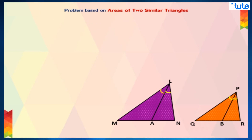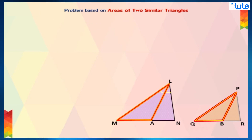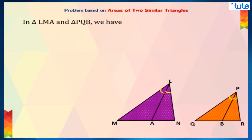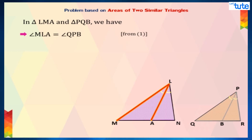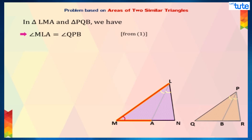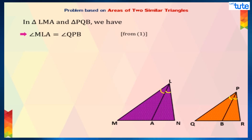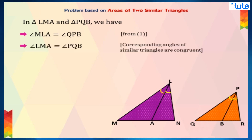But since LA is the angle bisector of angle L and PB is the angle bisector of angle P, we can say that angle MLA is equal to angle QPB. We'll consider this as equation 1. Now observe triangle LMA and triangle PQB. From equation 1, we know that angle MLA is equal to angle QPB.